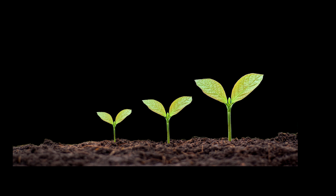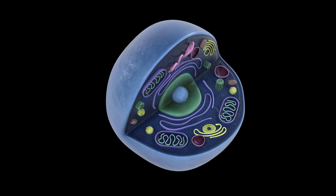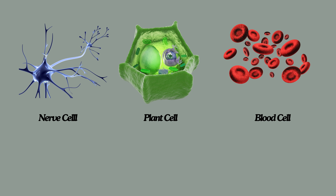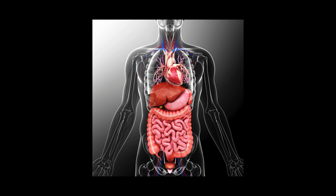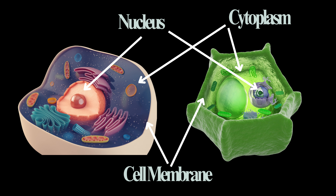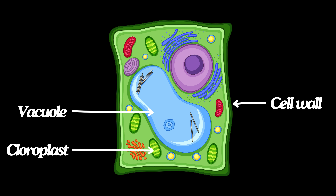Key Points About Cells and Living Things. Characteristics of living things include growth, reproduction, use of energy, and response to the environment. Cells are the basic units of structure and function in all living organisms. Complex organisms have specialized cells organized into tissues and organ systems. Cell structures — nucleus, cell membrane, and cytoplasm — each serve important functions. Plant cells have a cell wall and chloroplasts, while both plant and animal cells share many similarities.